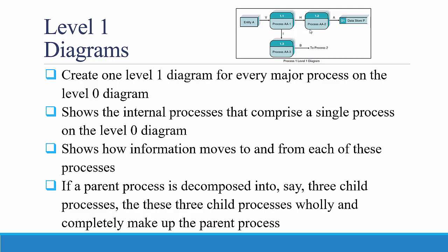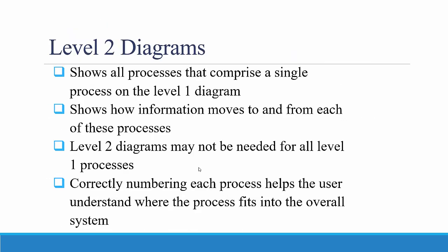You create one level one data flow diagram for every major process on the level zero diagram. These show the internal processes that comprise a single process on the level zero diagram and how information moves to and from each of those processes. If a parent process is decomposed into, for example, three child processes, then these three child processes wholly and completely make up the parent process. There may or may not be level two diagrams — it depends on the complexity of the system. But if any processes in the level one diagram appear busy with multiple inflows and outflows, it may be appropriate to decompose that process into a level two diagram. The ultimate goal is to decompose a process so that each child process performs one and only one essential task, not multiple tasks.